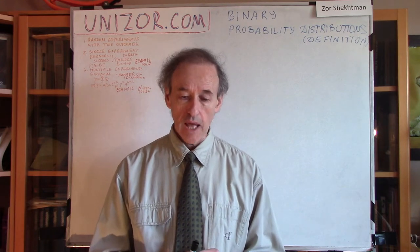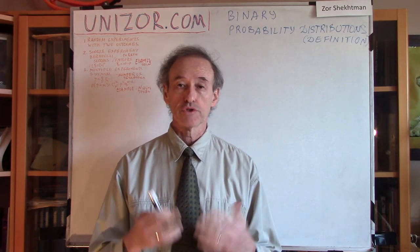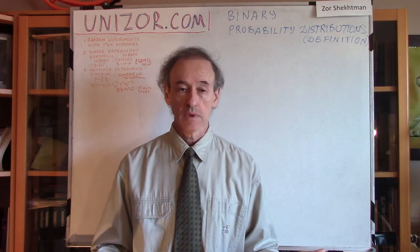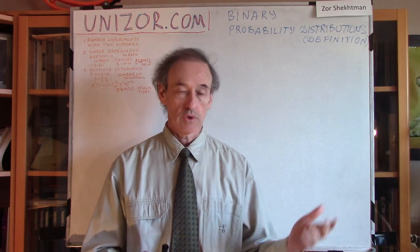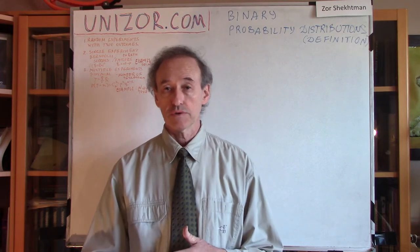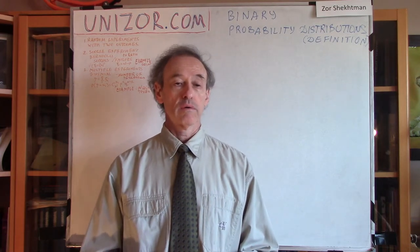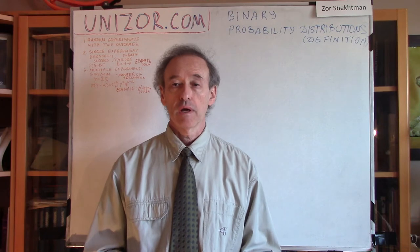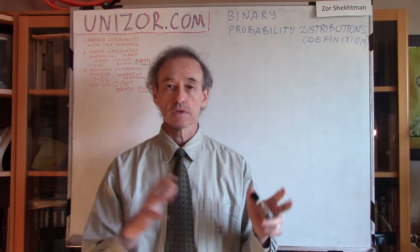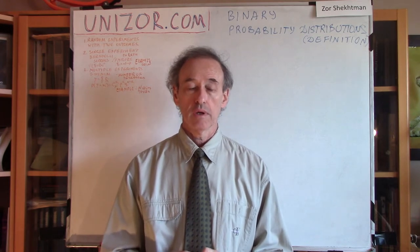As the name implies, binary distributions are related to things which have only two different possible values. Imagine an experiment which has only two results — like tossing a coin, which can be either heads or tails. So you have some experiment where the result is success or failure, or yes or no, or any other binary kind of experiment. All these binary distributions are related to experiments with just two different possible results.